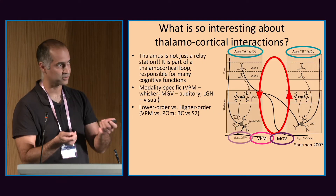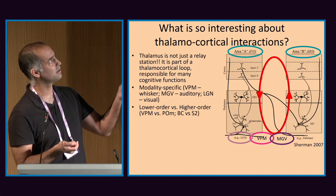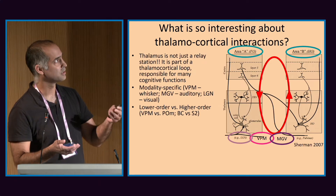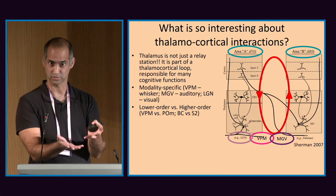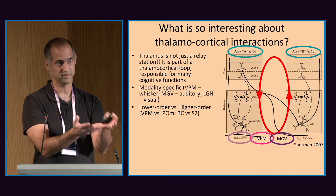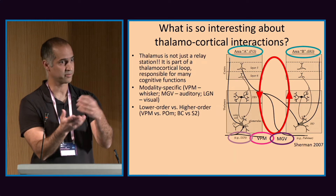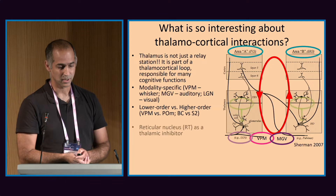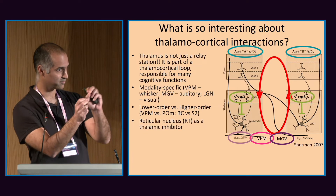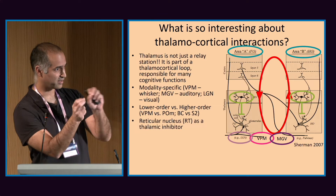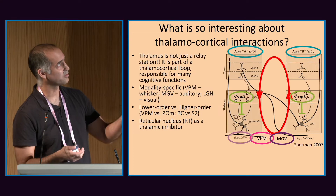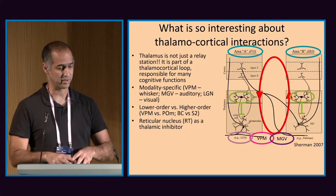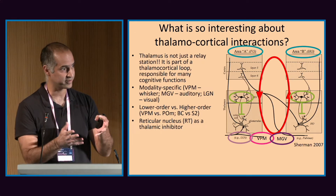For example, for whiskers, in the thalamus there is VPM and POM — lower and higher order. In cortex also, there is barrel cortex, S2, and other areas that seem to be higher. There are other interesting areas in thalamus, for example the RT, which has a lot of inhibitory effect on thalamus.